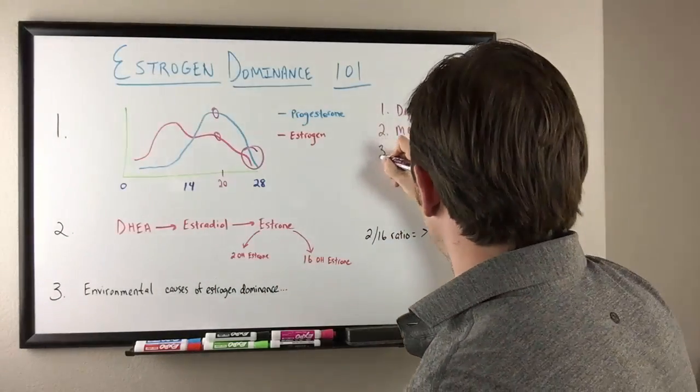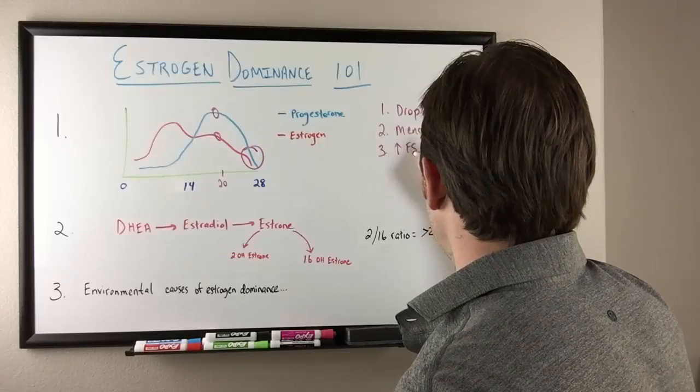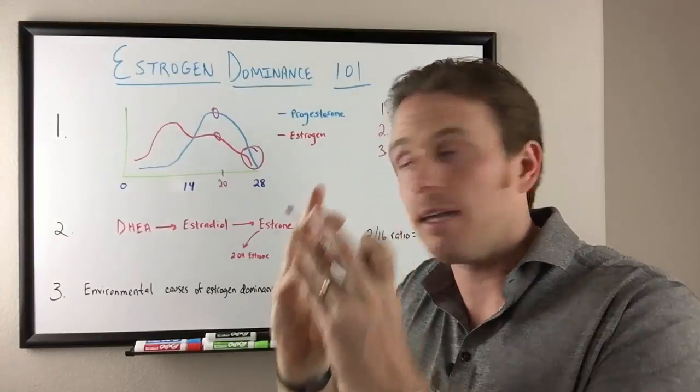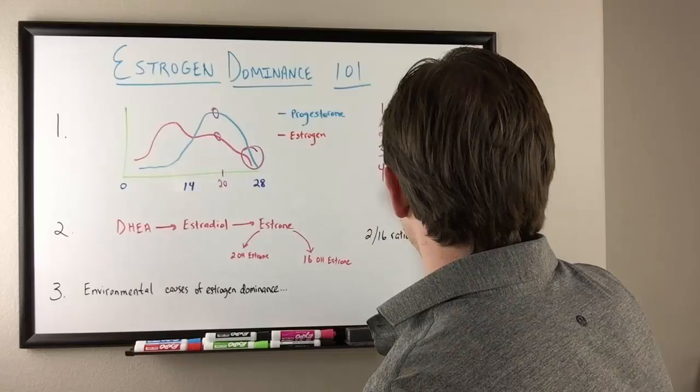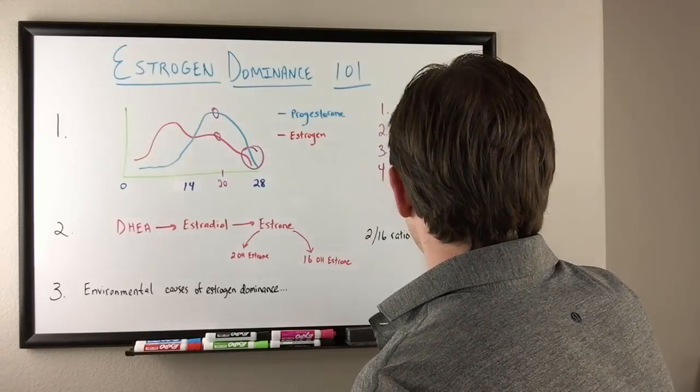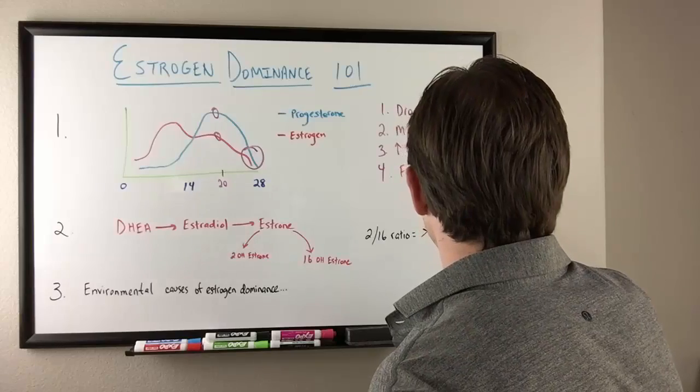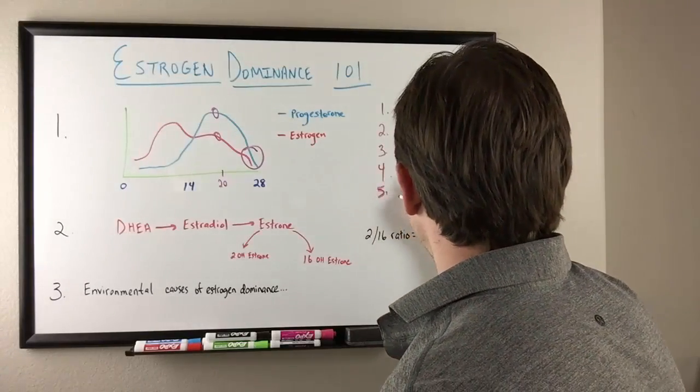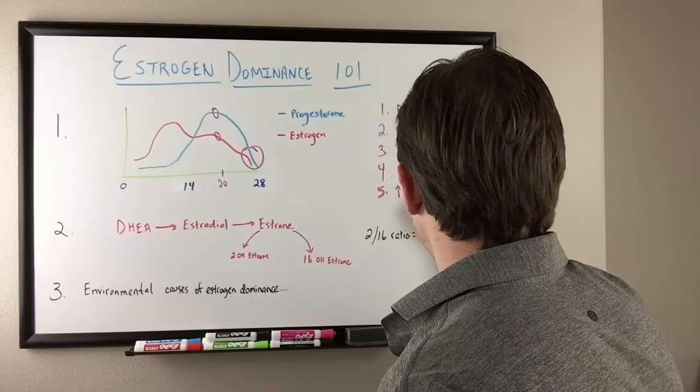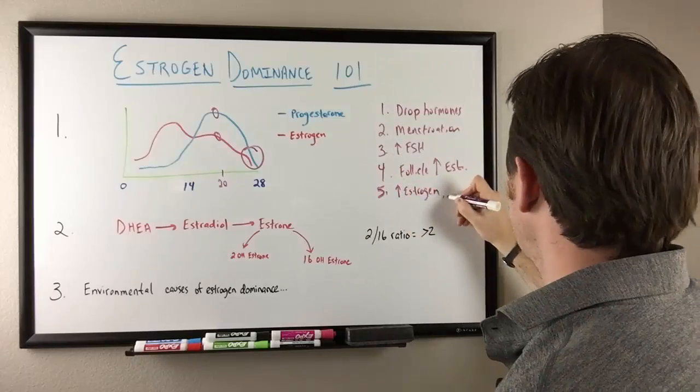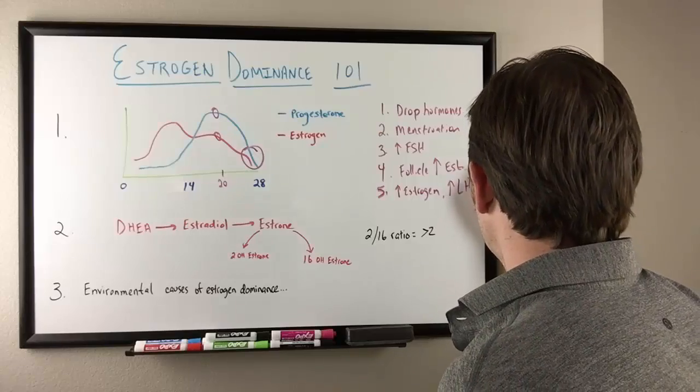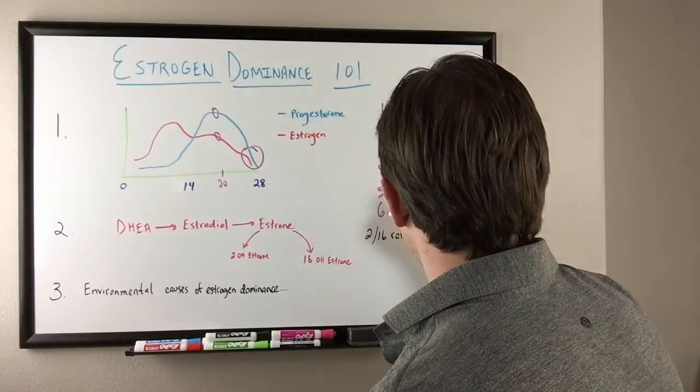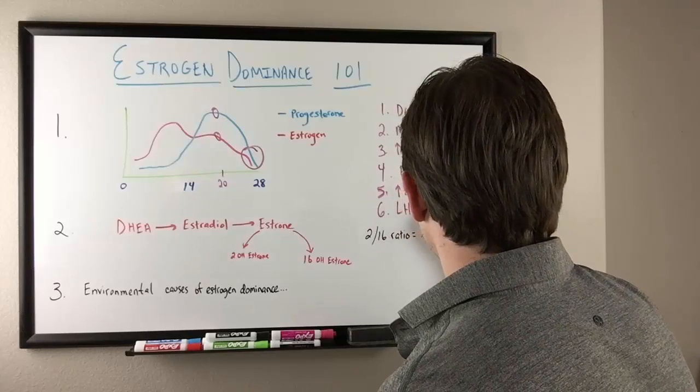The next thing we start to see after that is we see an increase in FSH. That increase in FSH grows that follicle into an egg. That follicle then starts to produce an increase in estrogen. That rise in estrogen causes an increase in LH, luteinizing hormone.